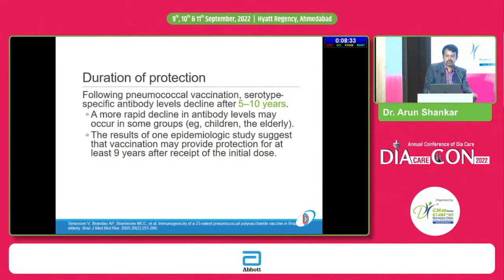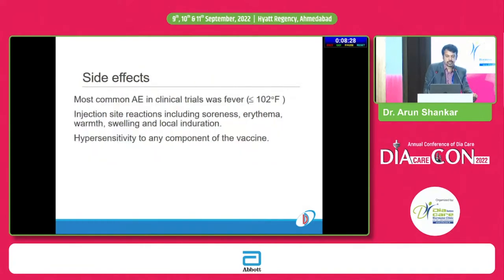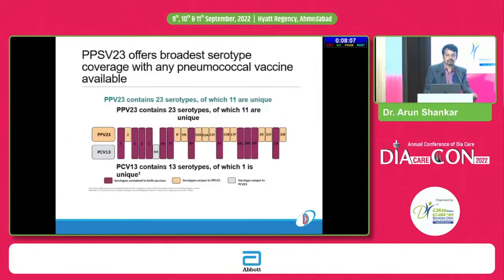One epidemiological study suggests vaccination may provide protection for at least 9 years after the initial dose. In our center, we haven't encountered any serious adverse events after pneumococcal vaccine — only one or two injection site reactions and fever. Hypersensitivity to any vaccine component should be assessed, so a proper history must be taken. The two vaccines discussed are PPSV23, which is commonly used and currently recommended, and PCV13, which addresses 13 serotypes.